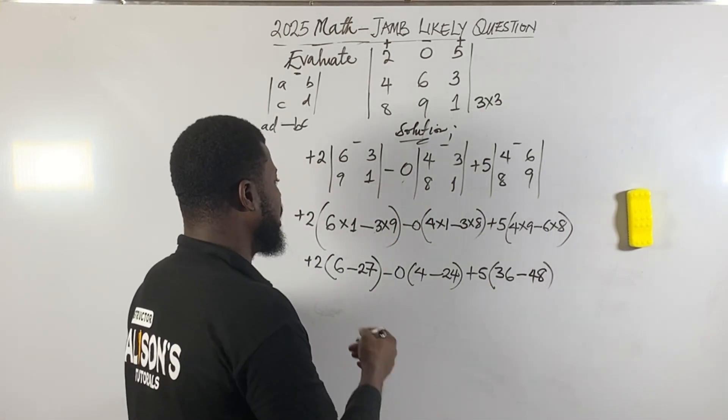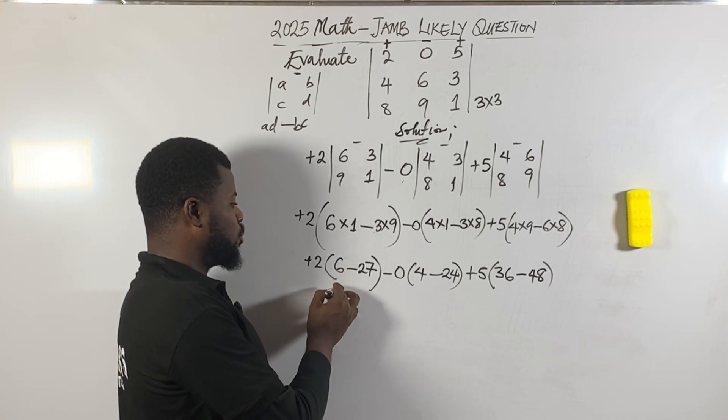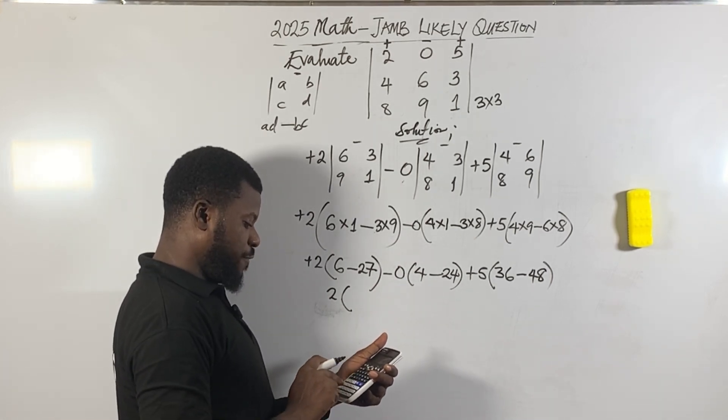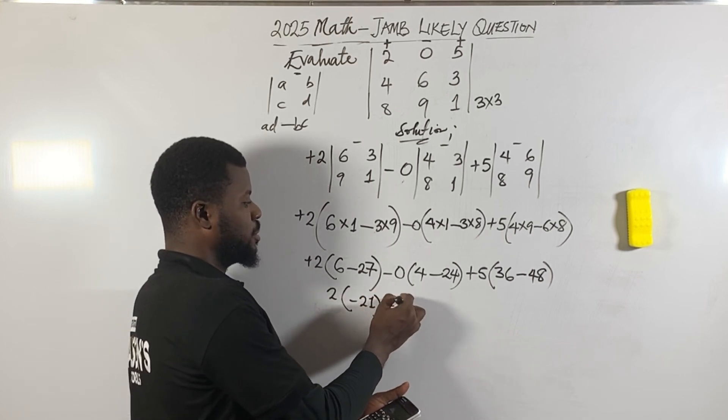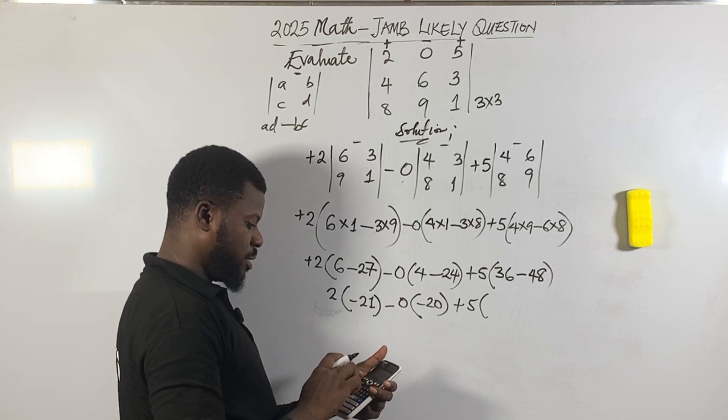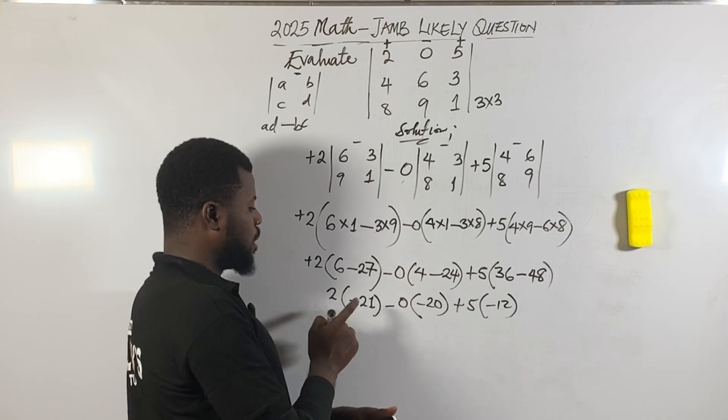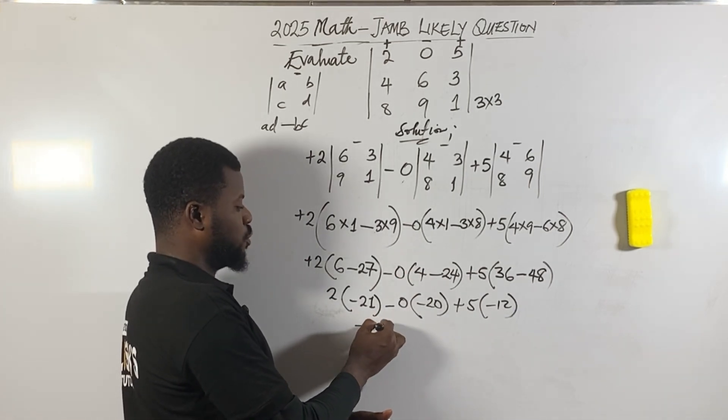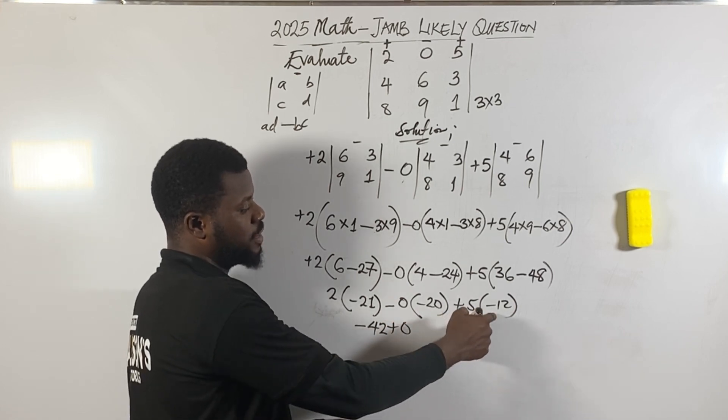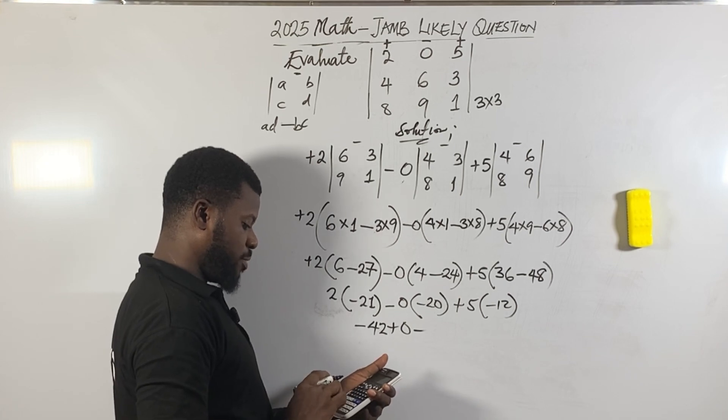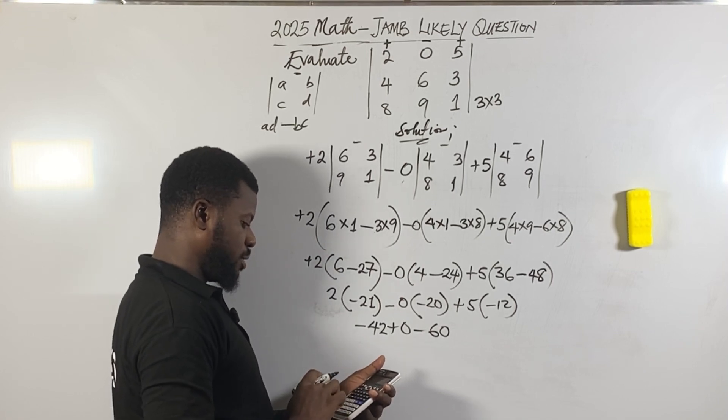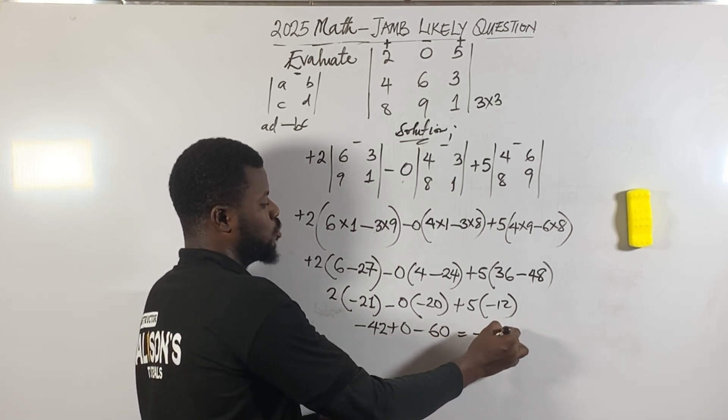Two times negative 21 gives negative 42. Minus zero times minus 20 will be plus zero. Five times minus 12 will be minus 60. So finally: minus 42 minus 60. The answer is minus 102 as the final answer.